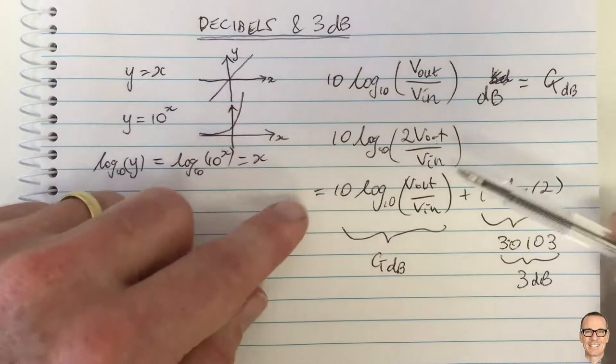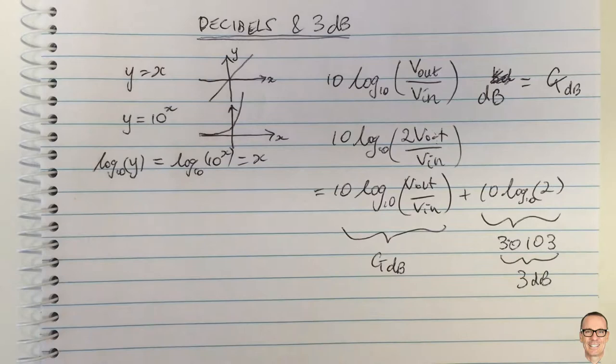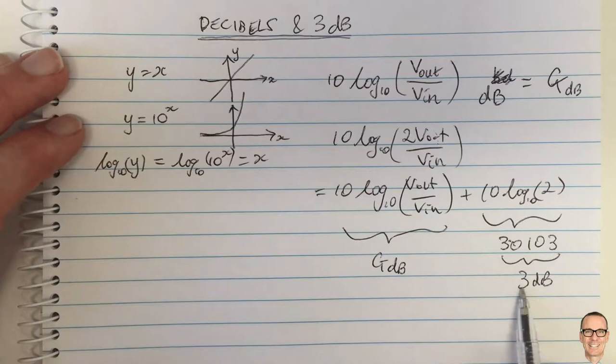So if we double the gain then in decibels we are adding 3 dB to the gain. So when you multiply in the real numbers when you look in the decibels you are adding. Multiplications become additions and so this is very interesting you double the gain and you add 3 dB and often we're looking about what we could do to make that kind of a change in a system.